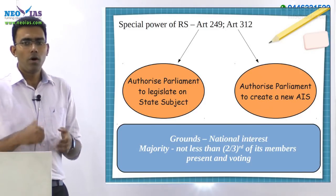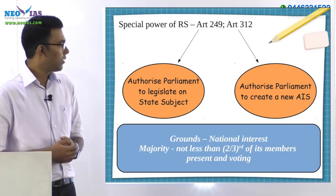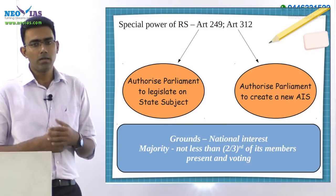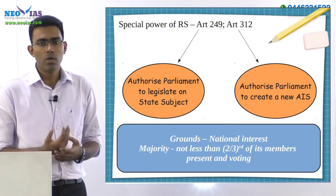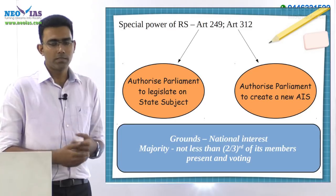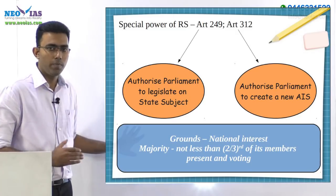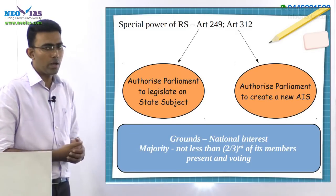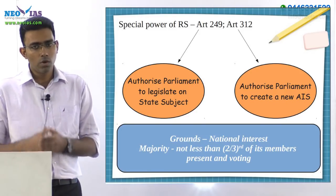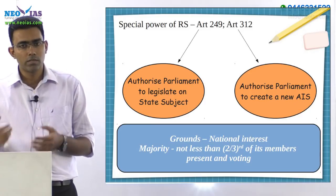Article 249 authorizes the Parliament to legislate on state subjects if Rajya Sabha passes a resolution to that effect. Article 312 also empowers the Parliament to create new All India Services if Rajya Sabha passes a resolution. In both cases, the ground has to be national interest, and the majority required is not a simple majority but a majority of not less than two-thirds of Rajya Sabha members present and voting.